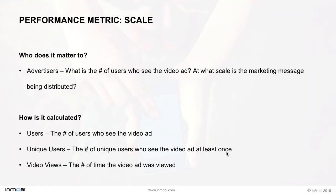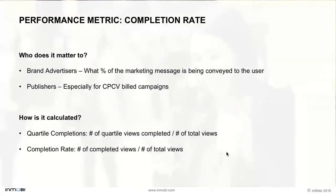The trade-off between spillage and scale is unavoidable. For brand advertisers, the most important KPI for measuring the performance of the video is completion rate. Advertisers may also measure the different quartile completions along the way, calculated as the number of views that completed the specific quartile — 25%, 50%, or 75% — divided by the total number of views. Quartile completions and completion rate tell you exactly how much of the marketing message is being conveyed to the user. Quite a few ad networks, InMobi included, ensure that the skip or close button doesn't appear until after Q1 complete.